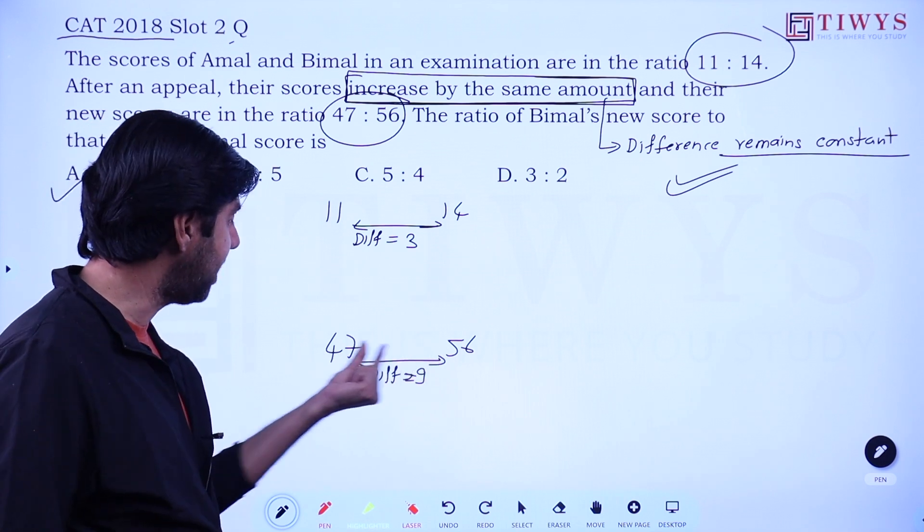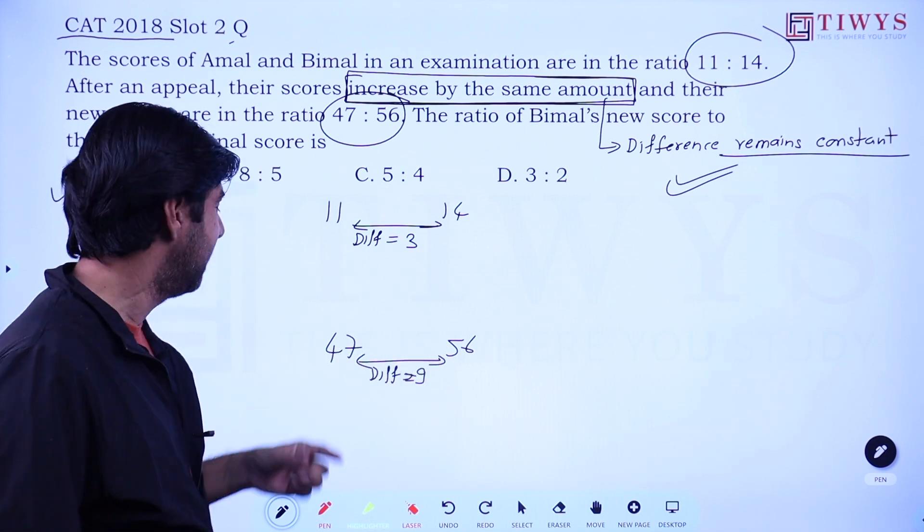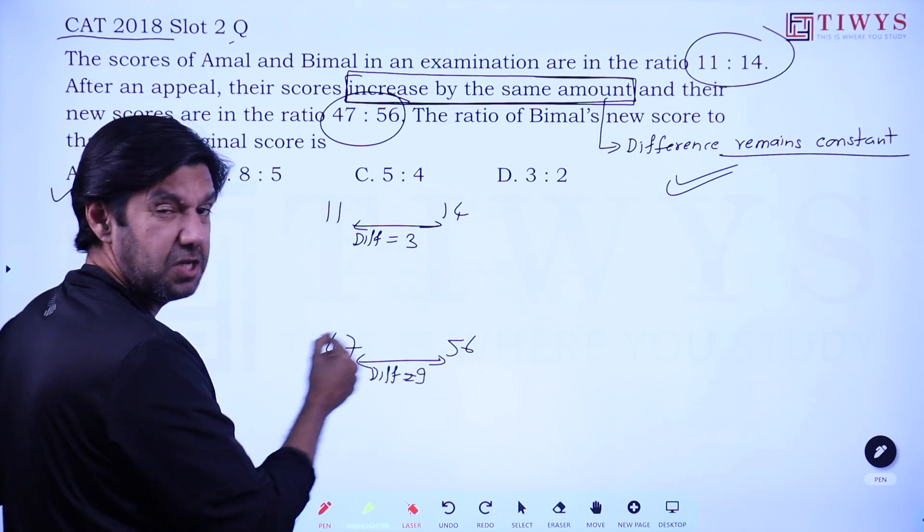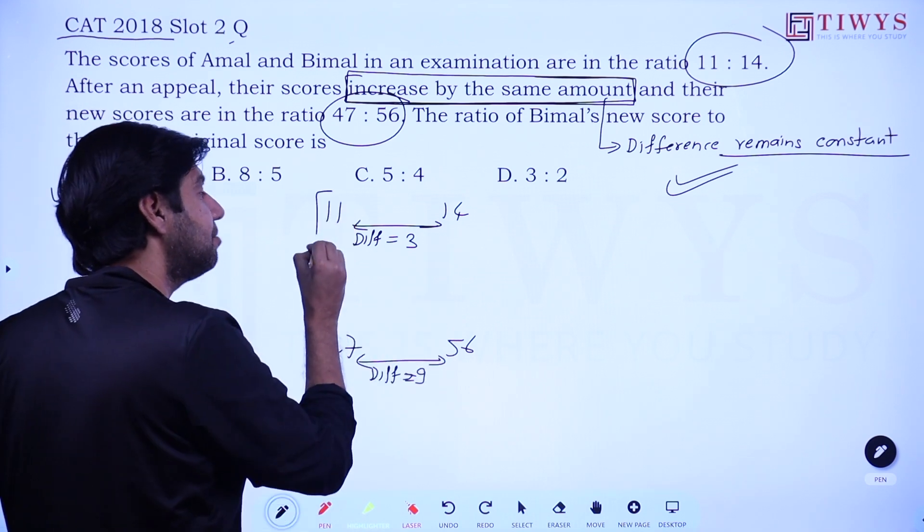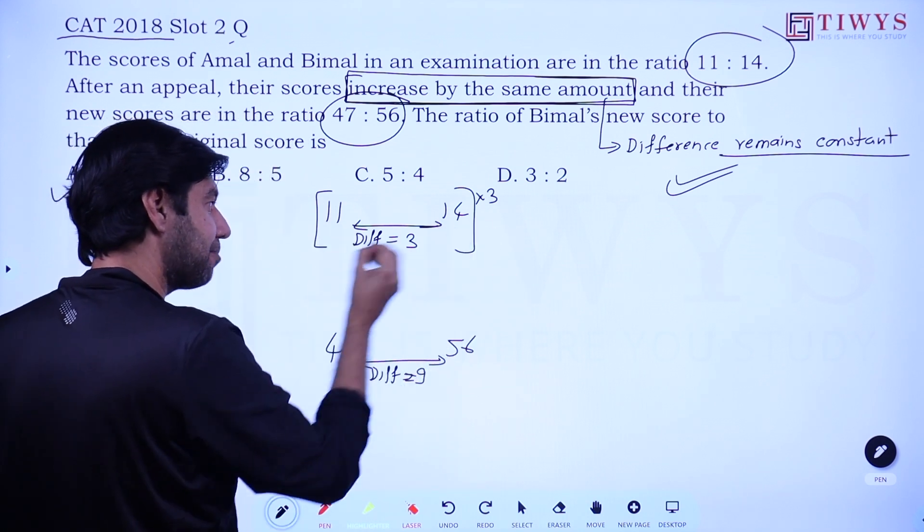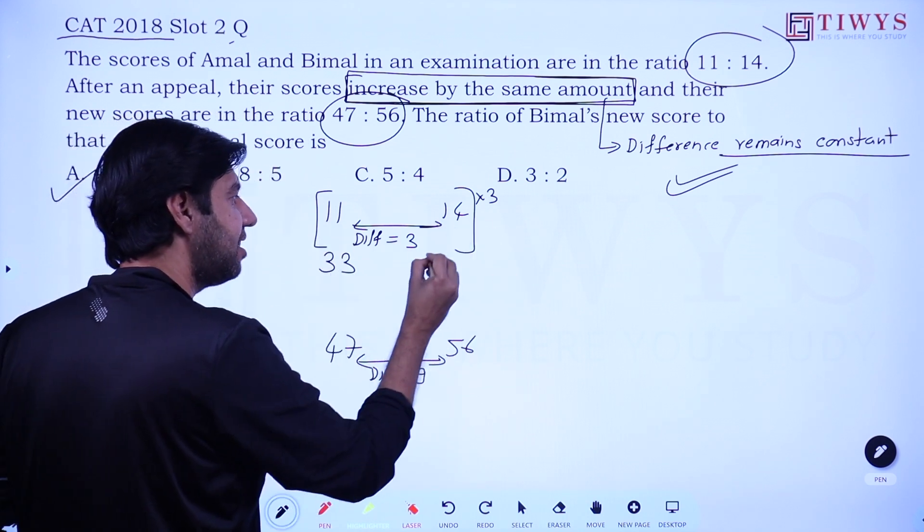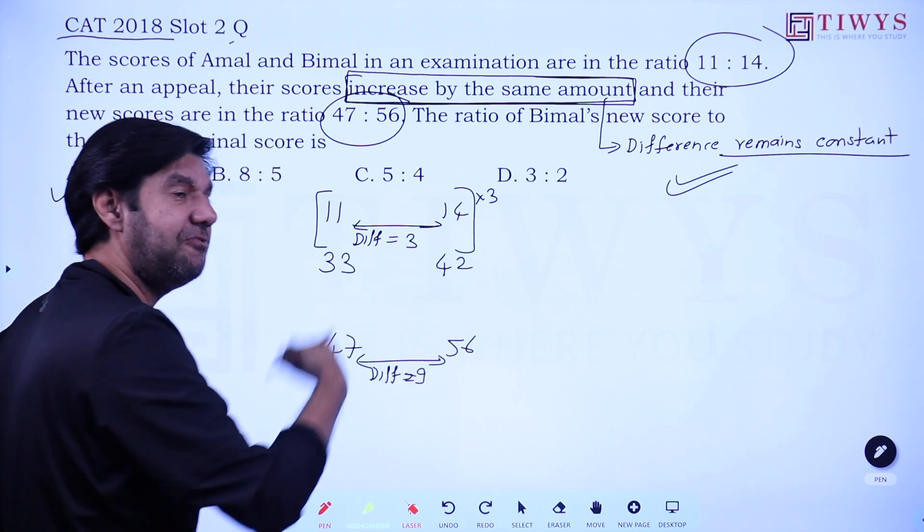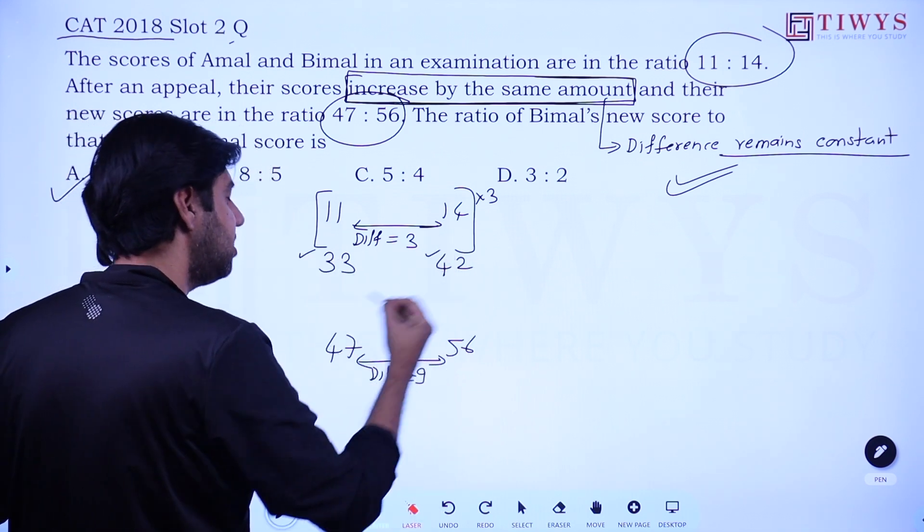However, dividing by 3 is not going to be so great, especially since these are not divisible by 3. So the easier thing is multiply this by 3. It doesn't matter what you do, the answer will be same. But multiplying is easy. I get 33 and 42.